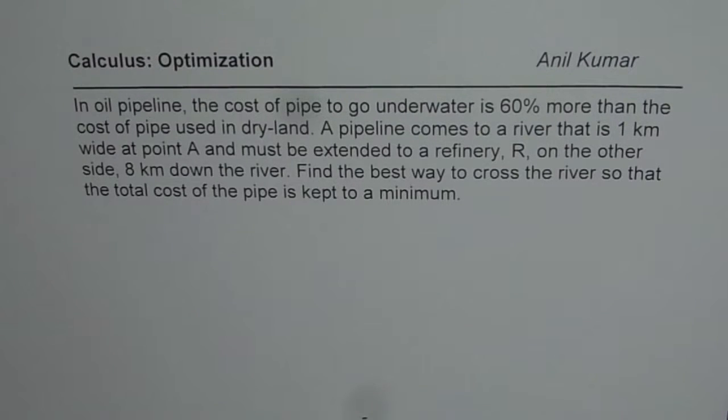In oil pipeline, the cost of pipe to go underwater is 60% more than the cost of pipe used in dry land. A pipeline comes to a river that is 1 km wide at point A and must be extended to a refinery R on the other side, 8 km down the river. Find the best way to cross the river so that the total cost of pipe is kept to a minimum.